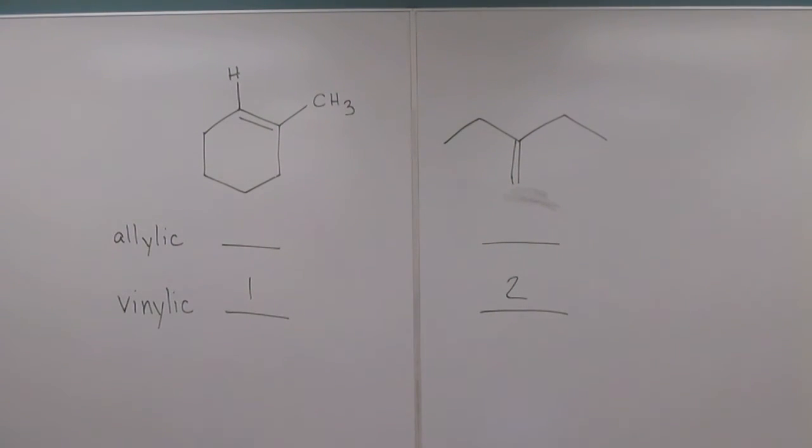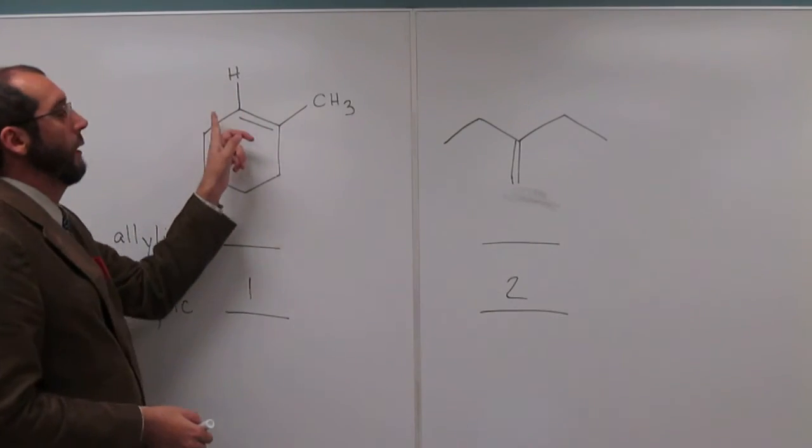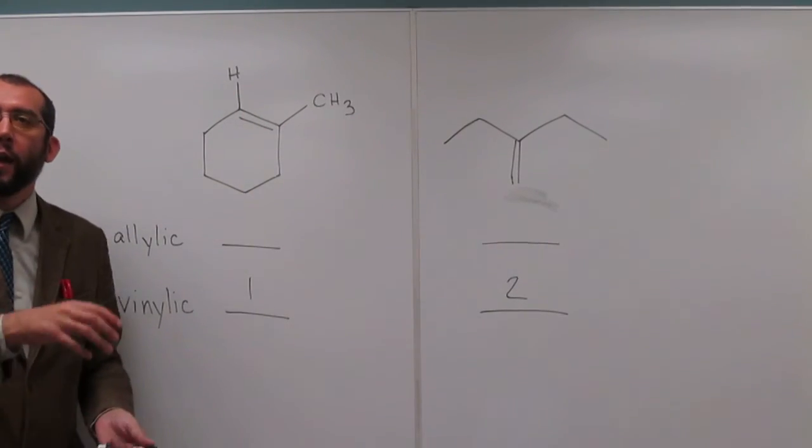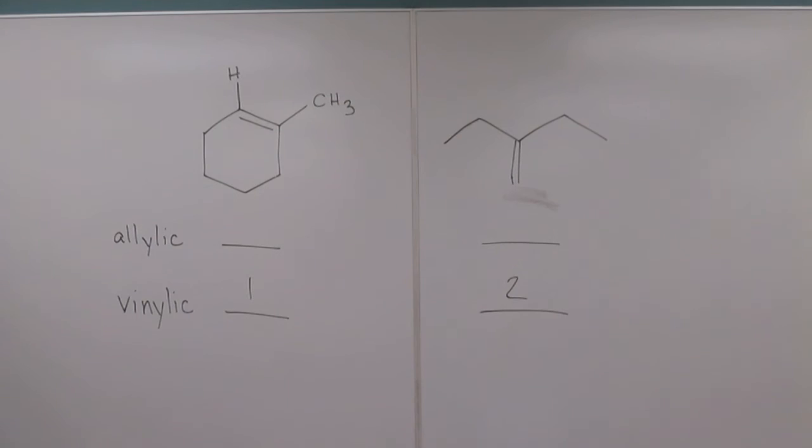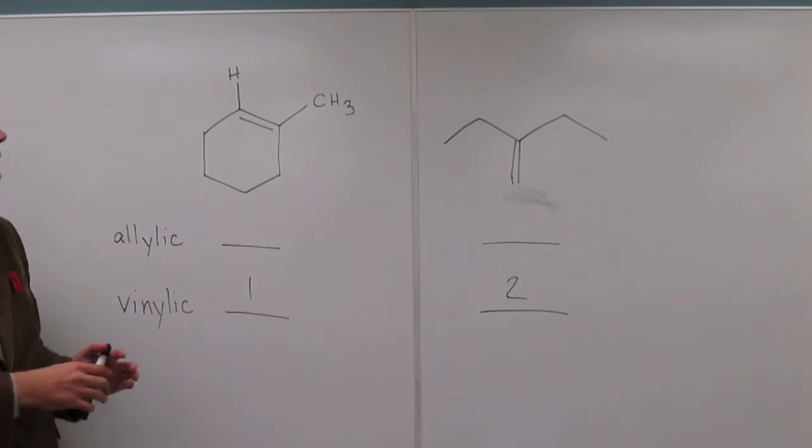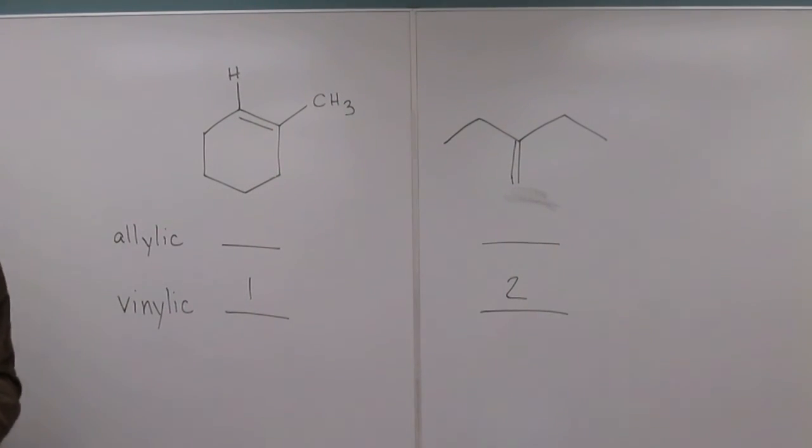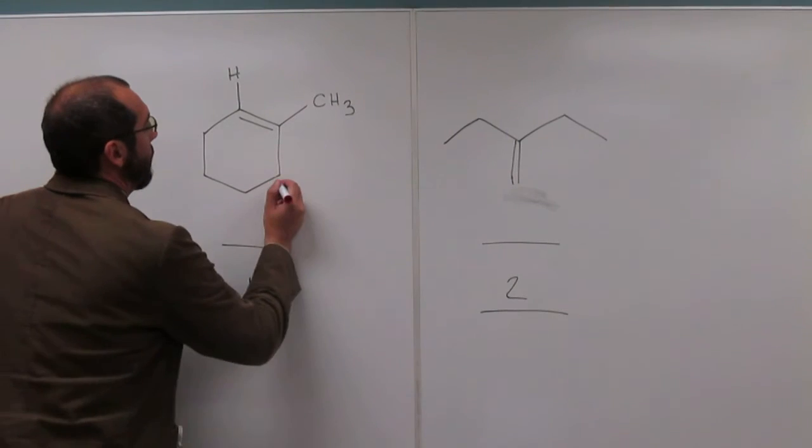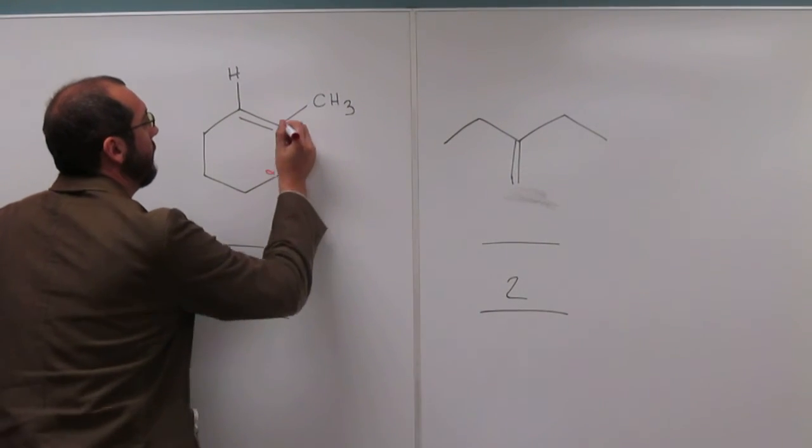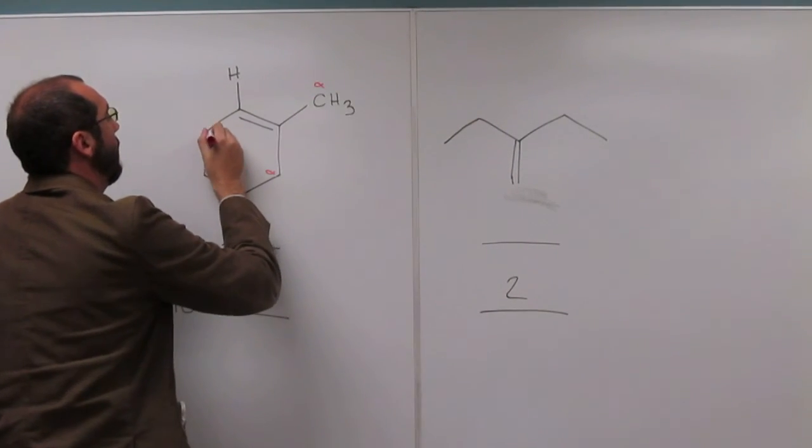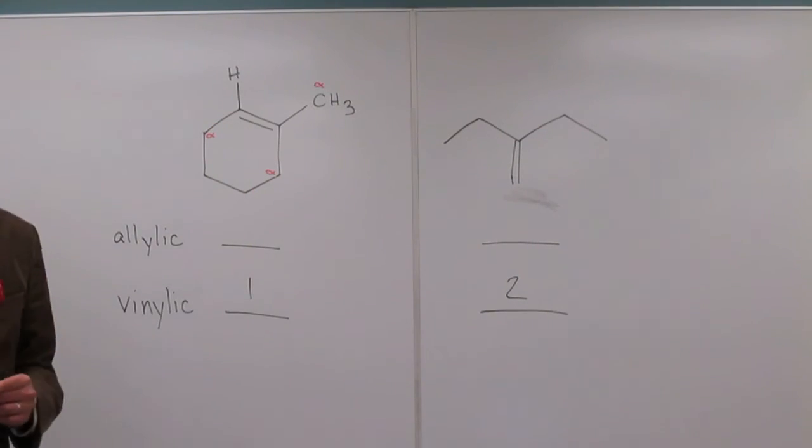So let's look at this double bond here. How many carbons do we have attached directly to that double bond, did we say? Three, right? One, two, three. So those are all alpha carbons. So I'm going to label them as such. So we'll say alpha, alpha, and alpha.